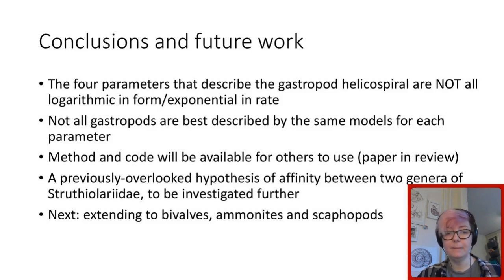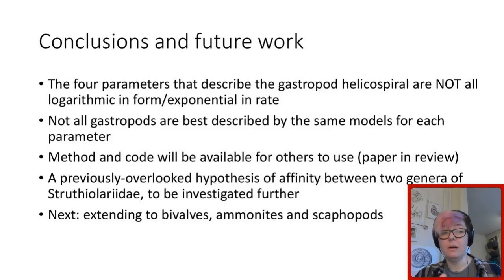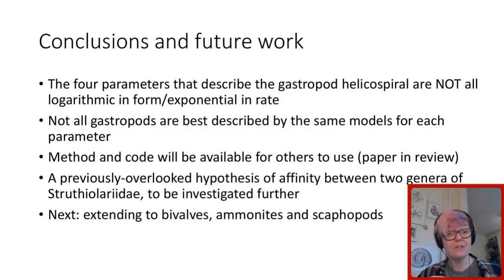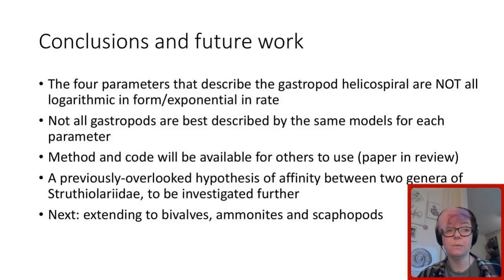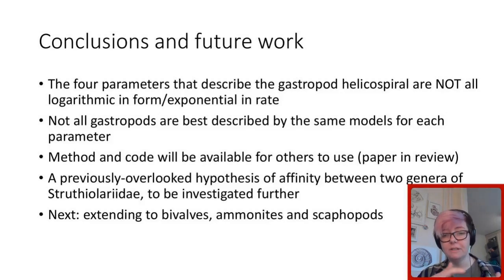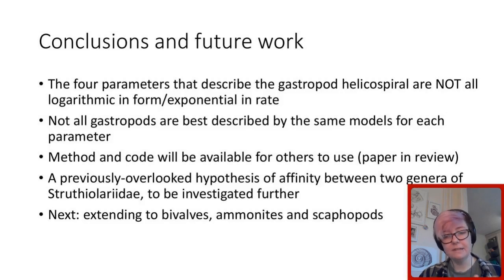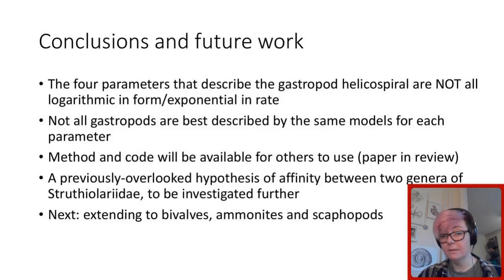This is an idea to test rather than a phylogeny I've built. This is one use of spiral morphometrics — because you can't really morphometrically compare *Conchothyra*, which is basically entirely enveloped with callus (a golf ball of an animal), to something like *Tylospira scutillata*, which is very elongate, slender, and fusiform. But using the spiral morphometrics, you can. In conclusion: the four parameters describing the helicospiral are not all logarithmic or exponential in rate; not all gastropods are best described by the same models throughout ontogeny. The method and code will be available for others to use, written in R Markdown, with the paper in review.